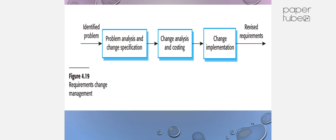First, identify the problem, then perform problem analysis, and build the change specification. Some changes will happen, and change analysis will take place. Costing is also involved — we will analyze the costing, which represents the difference in scope. Change analysis and costing are done in the next phase, and then revised requirements will be obtained.